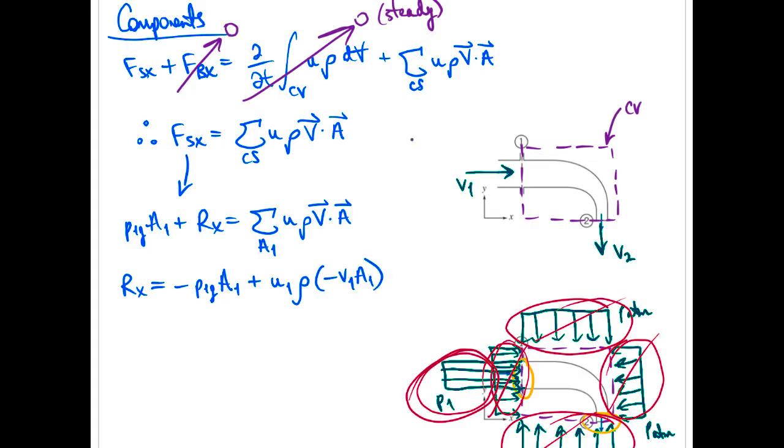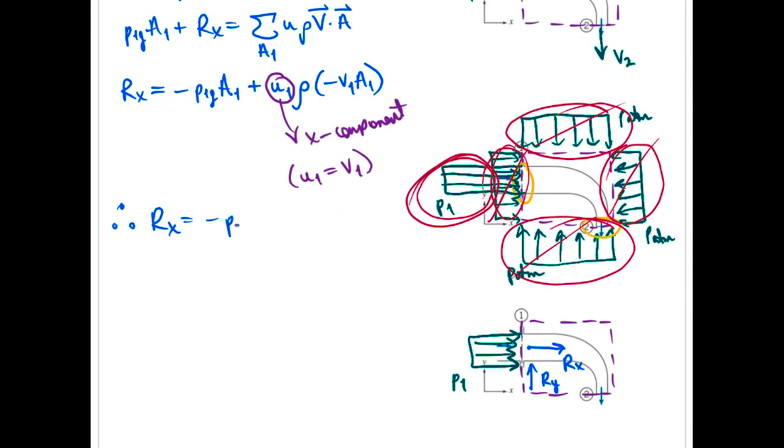So what that u1 is denoting is that's the x component of the velocity at point 1 there. We see from our figure that all of the velocity is in the x direction so we can write that as follows. All right that's our final expression.